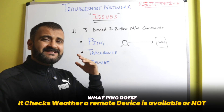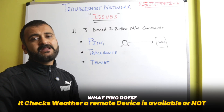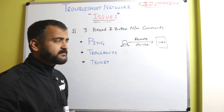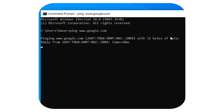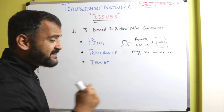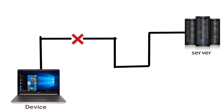So what ping does — ping simply checks whether a remote device is available or not. For example, if a website is not reachable, one thing you could do is try pinging its IP address and see if you are getting the response. And if you are not getting the response, you can come to a basic conclusion that there could be something broken in the network.